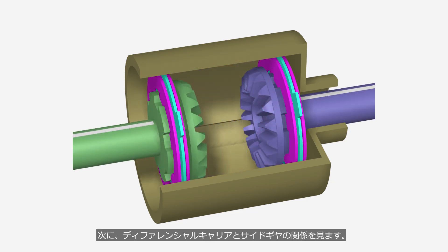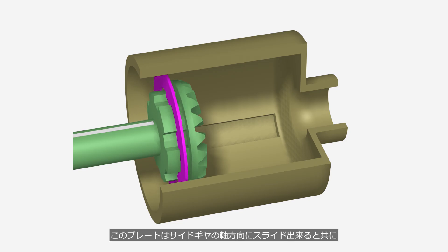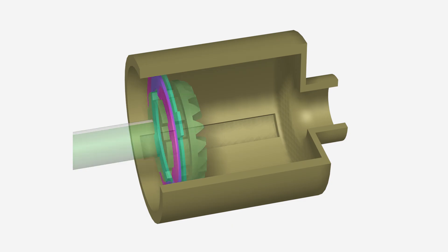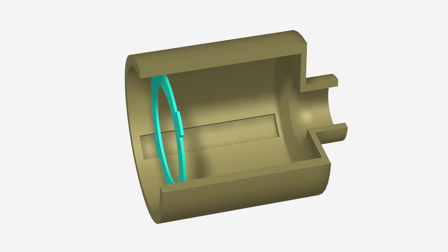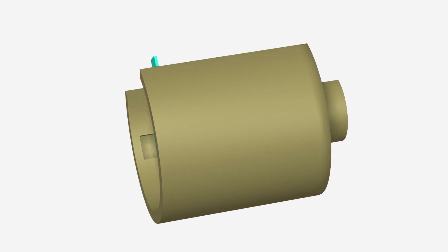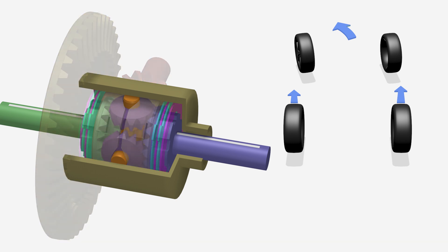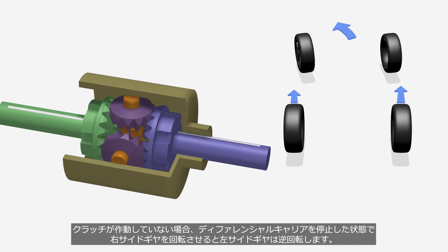The clutch plate with teeth on its inner circumference is engaged in the grooves of the side gear — it can slide axially and rotates together with the side gear. A clutch plate with teeth on its outer circumference is engaged in the grooves inside the differential carrier, sliding axially and rotating with the carrier. When no engine torque is applied, this system absorbs the speed difference between the left and right tires in the same way as open differentials — if the right side gear is rotated with the differential carrier held stationary, the left side gear rotates in the opposite direction.